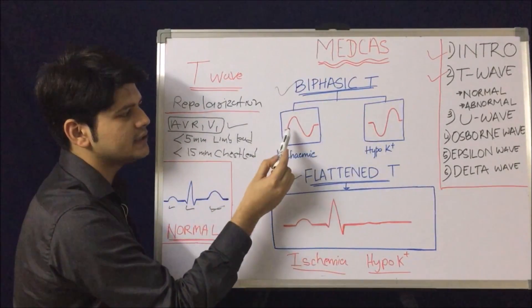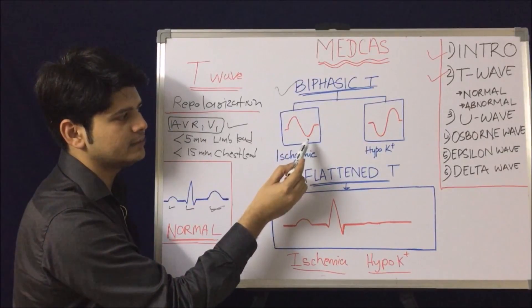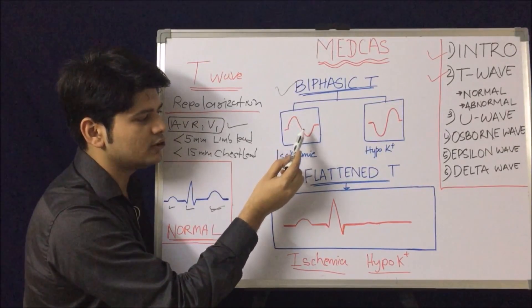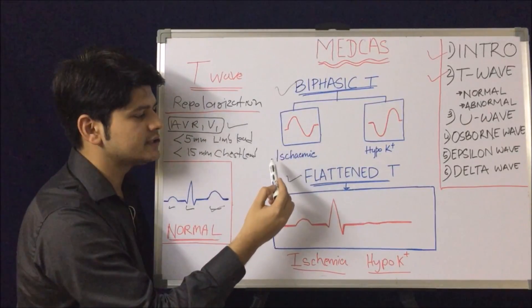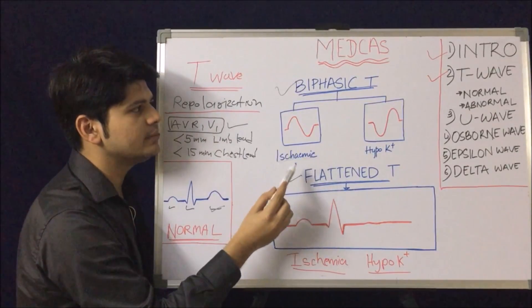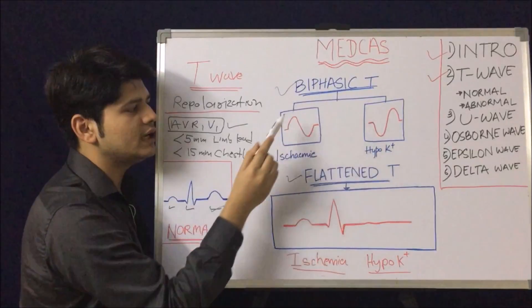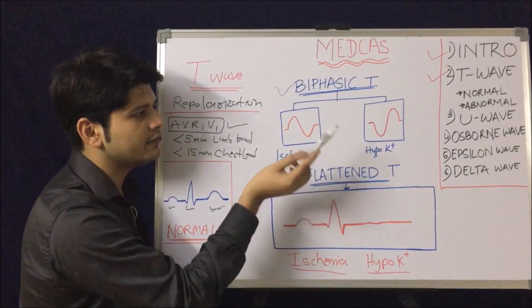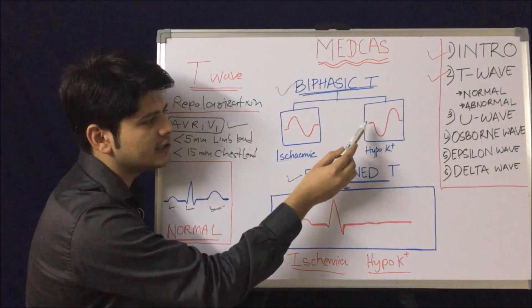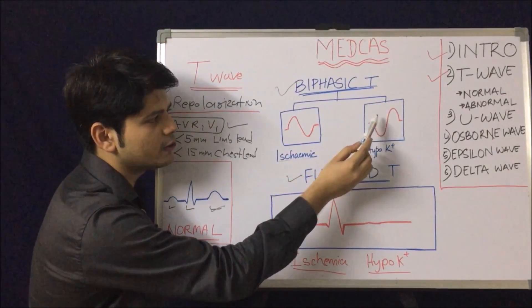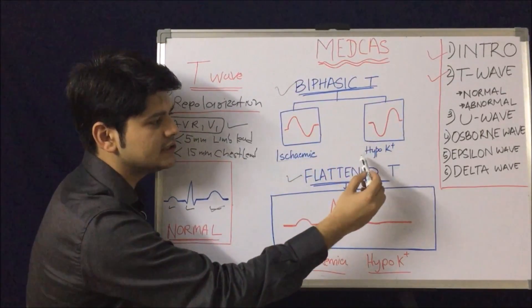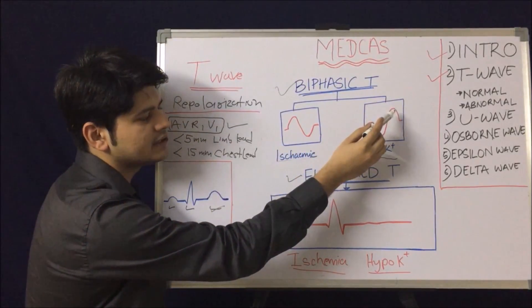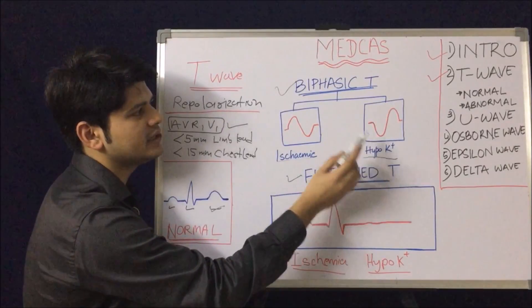A biphasic T wave has one positive and one negative deflection. If the positive deflection comes first followed by the negative deflection, it suggests ischemia. If the case is reversed — the negative deflection first followed by the positive deflection — it is seen in hypokalemia. So negative-first then positive indicates hypokalemia.